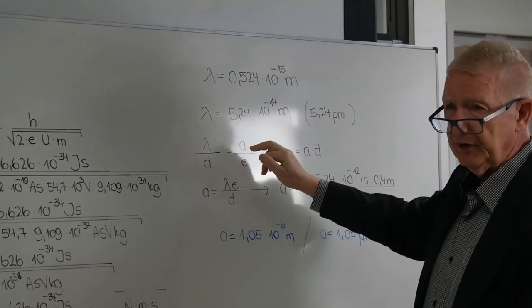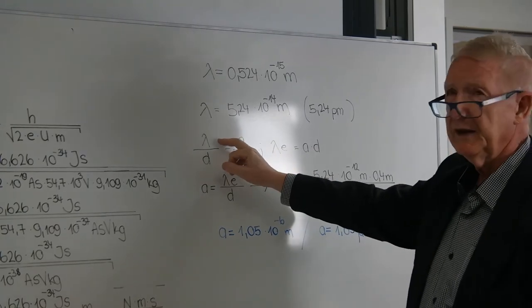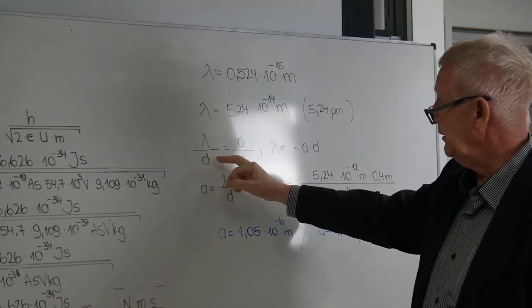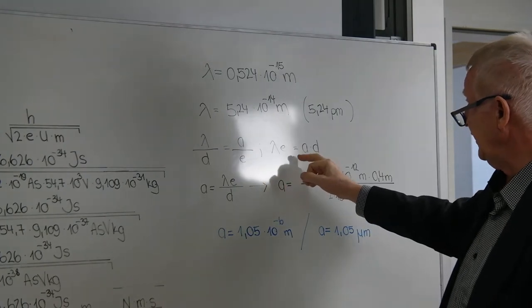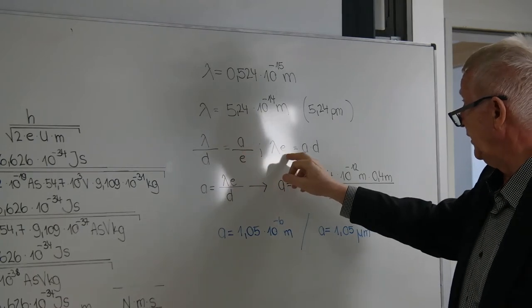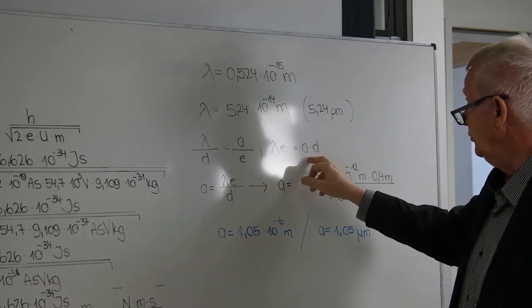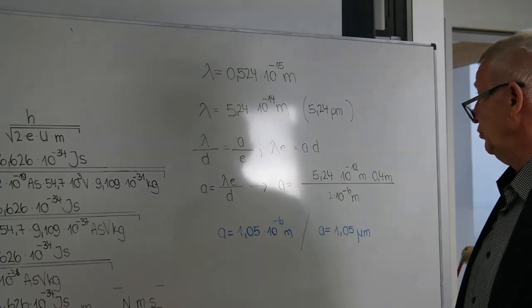Now there is a relationship regarding the interference maxima: lambda to D is like A to E. And since we're calculating A, the spacing, I can cross-multiply. Then we have lambda × E = A × D, and dividing by D gives A = lambda × E / D.